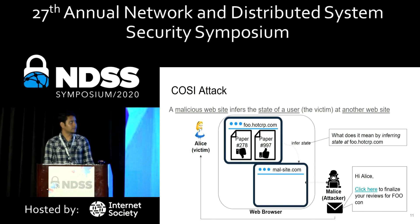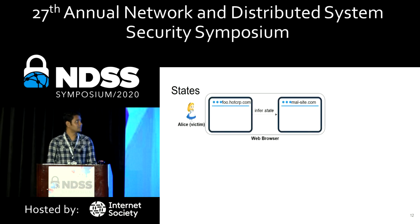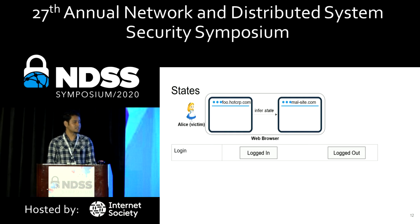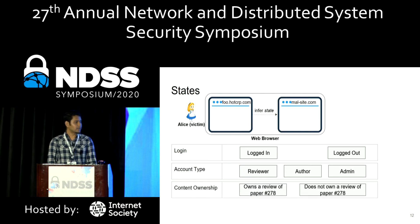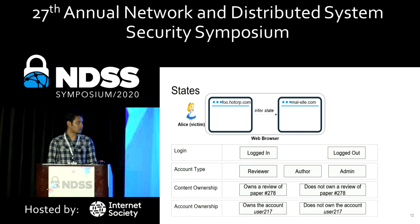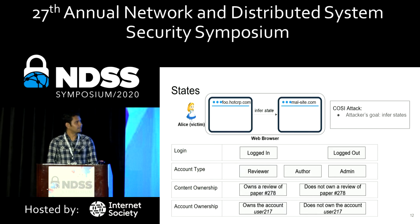So what does it mean to infer states? During the time of the COSI attack, Alice can be in different states at hotcrp.com. For instance, Alice can be logged in or not — this is the login state. There is also the account type state: Alice can be logged in as a reviewer, author, or admin. Then there is the content ownership state, which says whether Alice has access to the reviews of a specific paper. Similarly, there is the account ownership state, which tells whether Alice is the owner of a specific user account identified by, say, user 217.